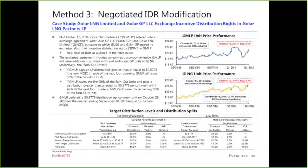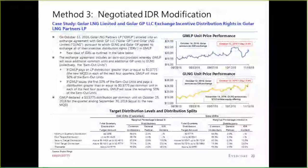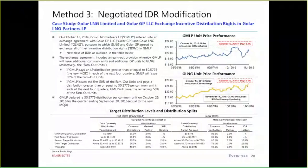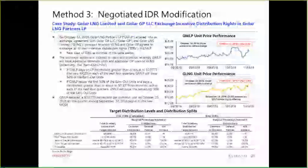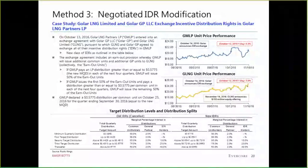GOLAR did something slightly different — a reset where the GP gave up the IPO-era IDRs but received deferred or earn-out units: 50% paid if the partnership continued to pay the new MQD for the next four quarters, and the other 50% if the MQD is maintained for the four quarters after that. This was a modification — not exactly how the partnership agreement read — but provided a bit more protection to LP holders.